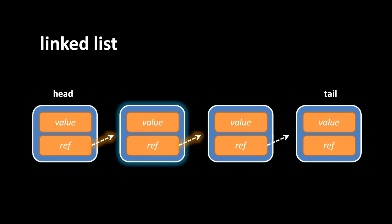But as long as we keep track of where the head is located, we can get to any of the elements. We can follow the chain from one node to the other, all the way to the tail. The end of the list is simply denoted by a tail node — a node in which the reference is null. It's the one node that doesn't point to another node.